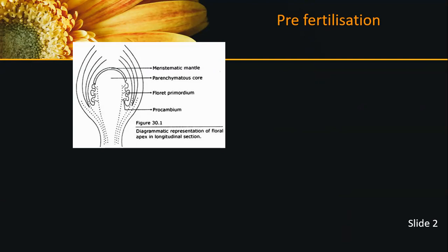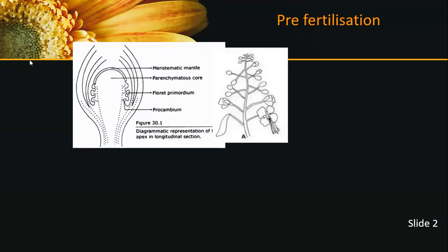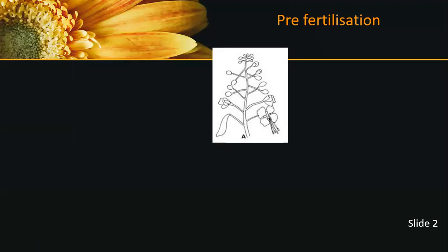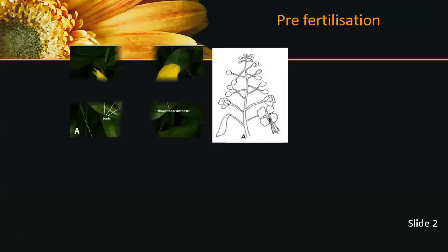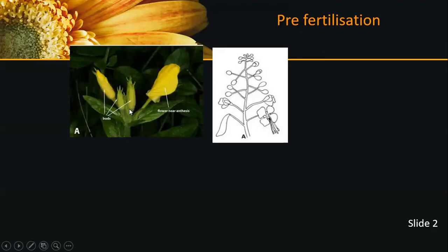Hormonal changes and structural changes lead to floral primordia formation. This floral primordia leads to the formation of inflorescence. In the shoot apex, some hormones and structural changes occur, and it produces inflorescence. From inflorescence, floral buds are formed.